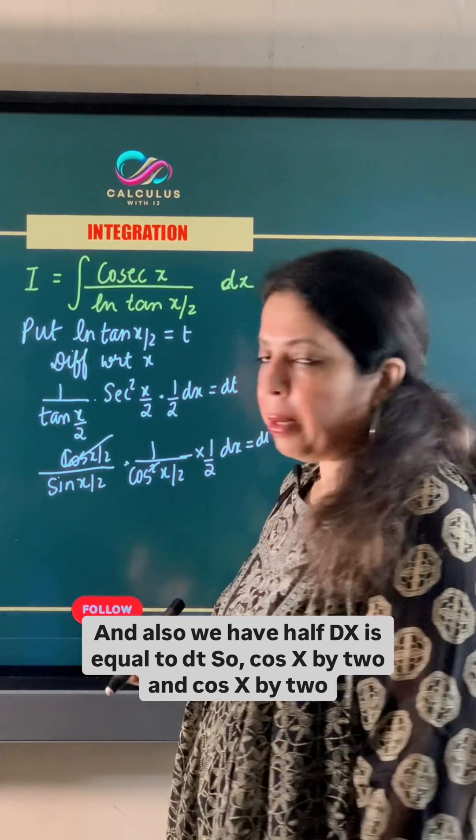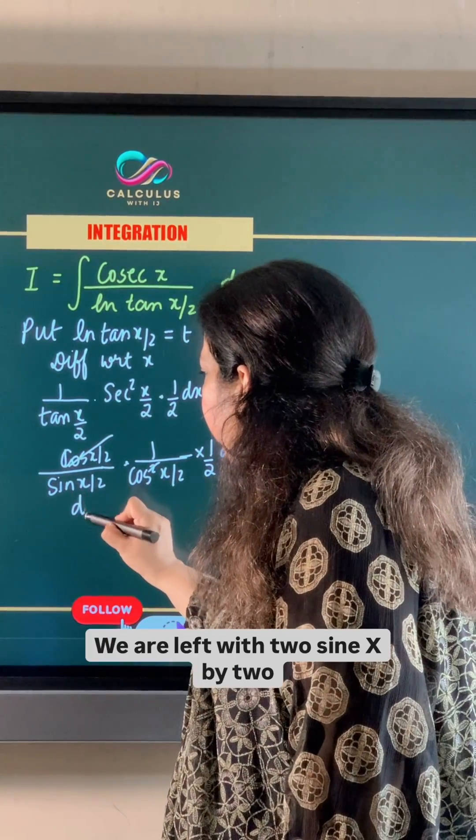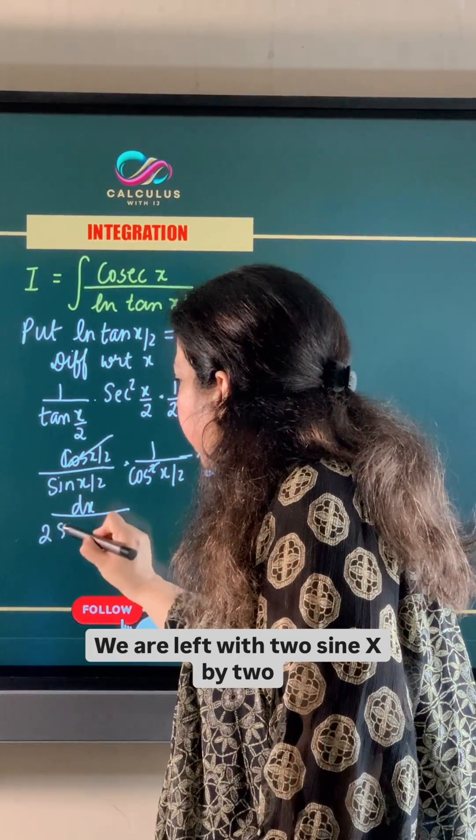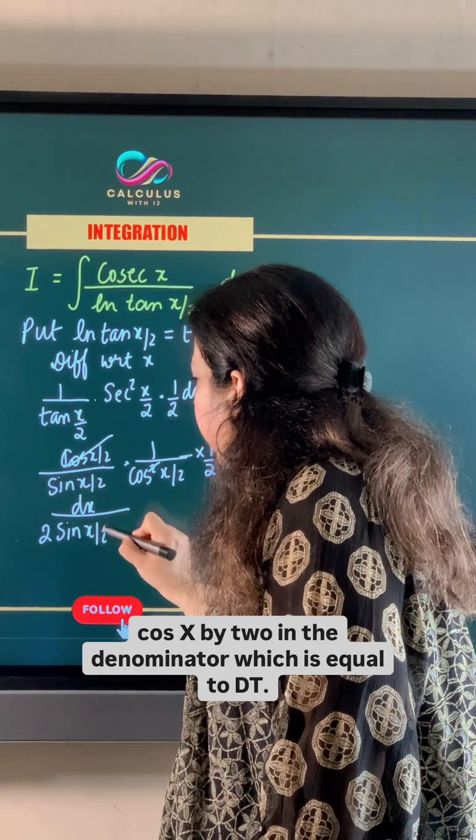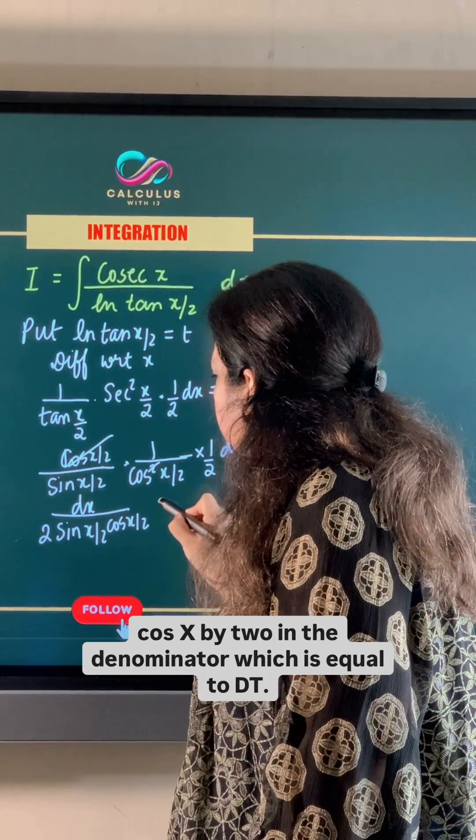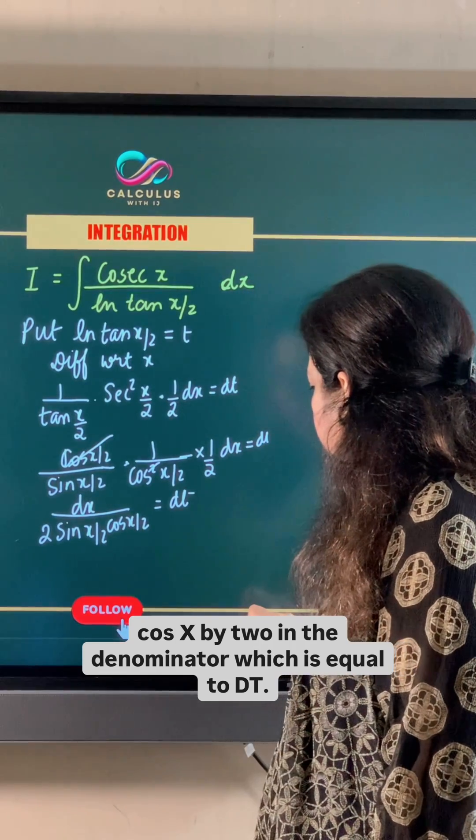So cos x by 2 and cos x by 2 get cancelled. We are left with 2 sin x by 2 cos x by 2 in the denominator which is equal to dt.